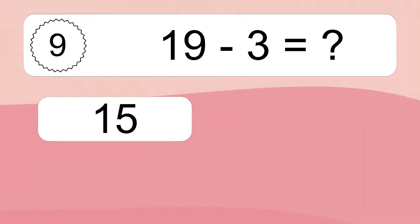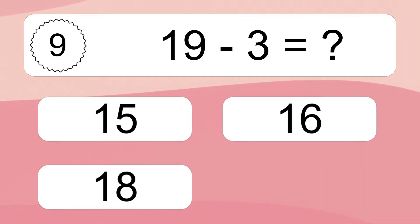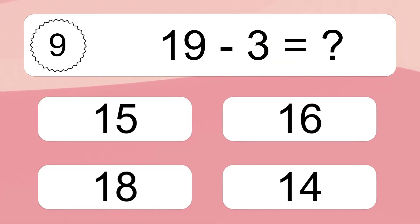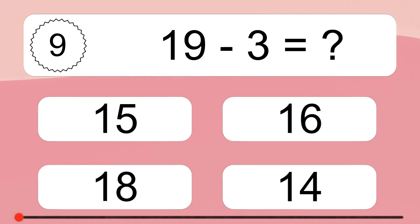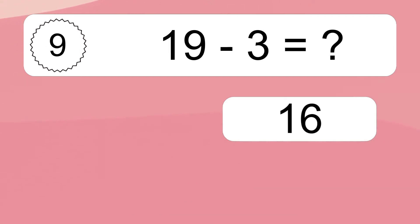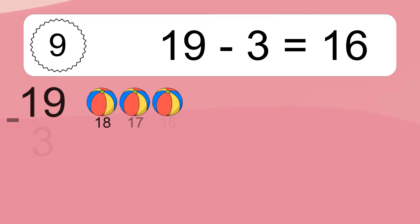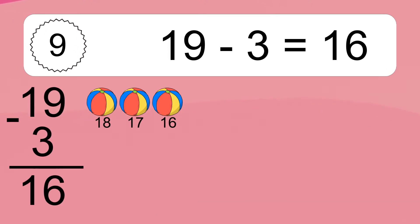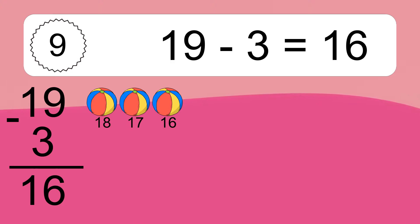19 minus 3 equals what? 19 minus 3 equals 16. Let's count it. 18, 17, 16.